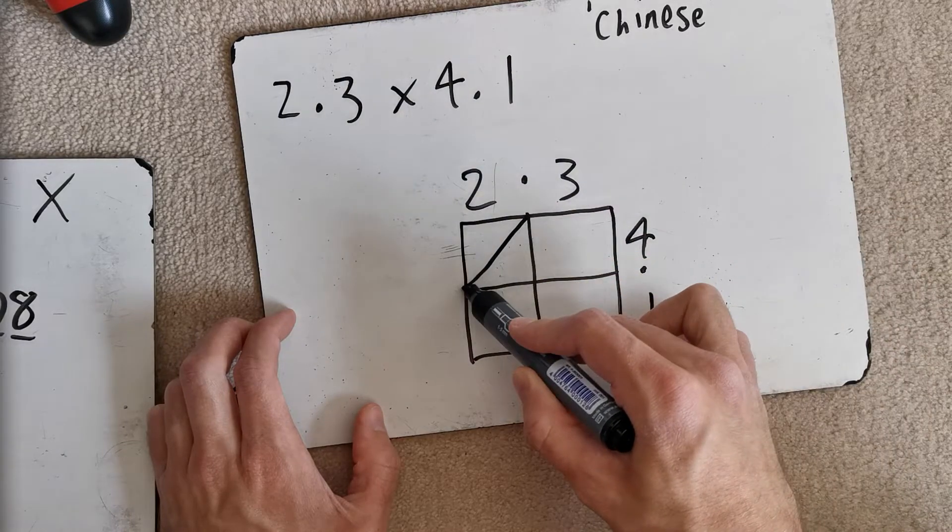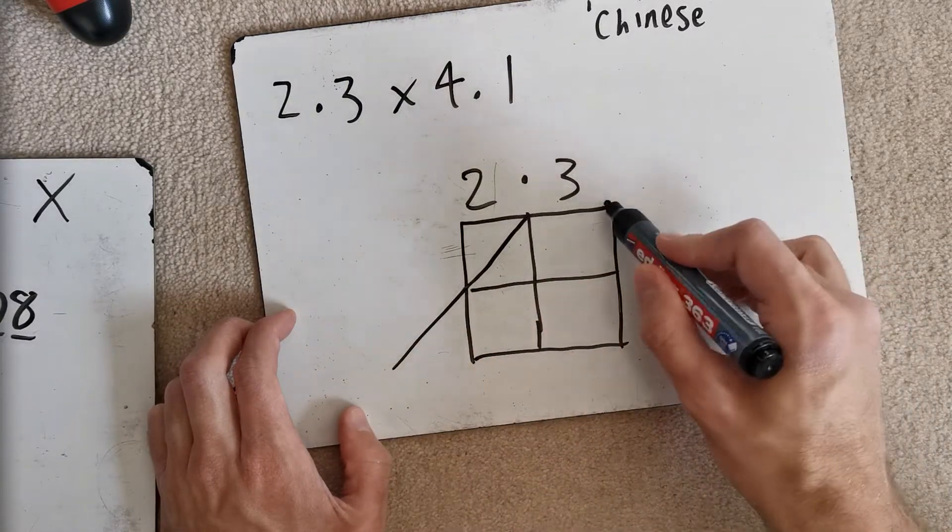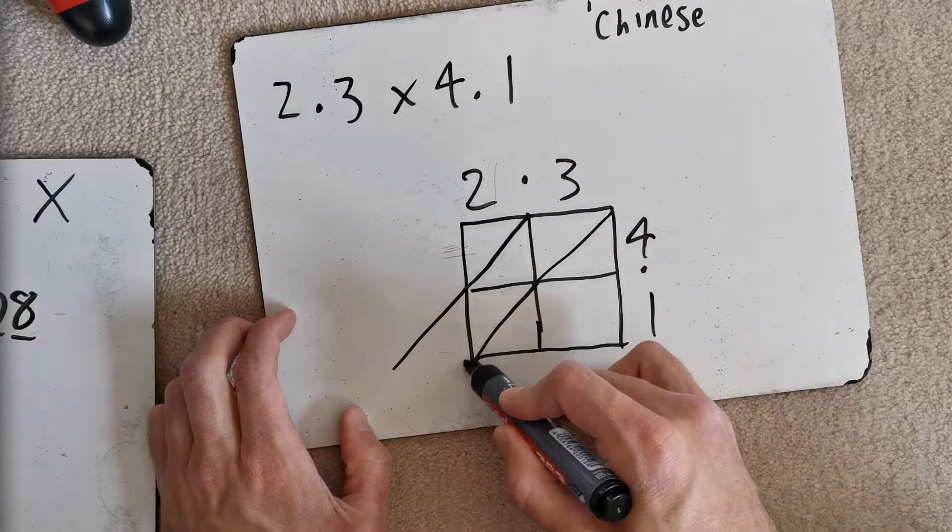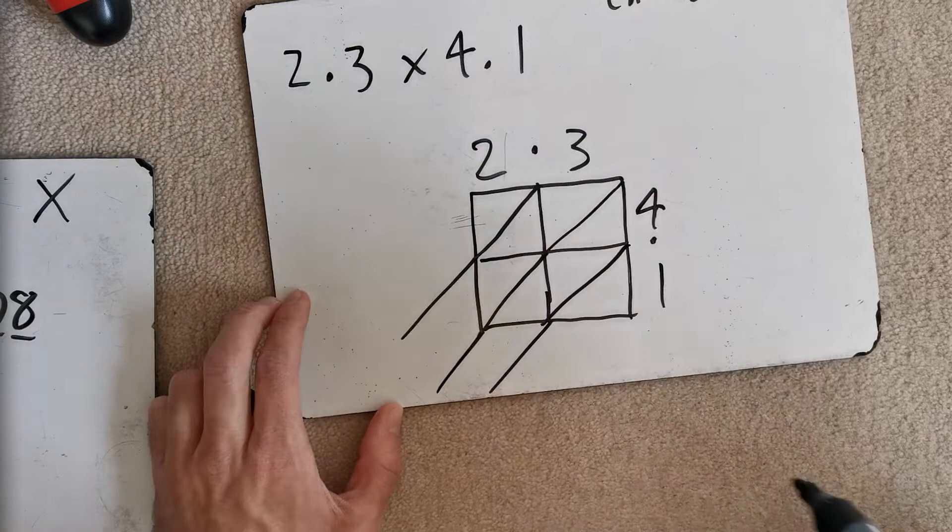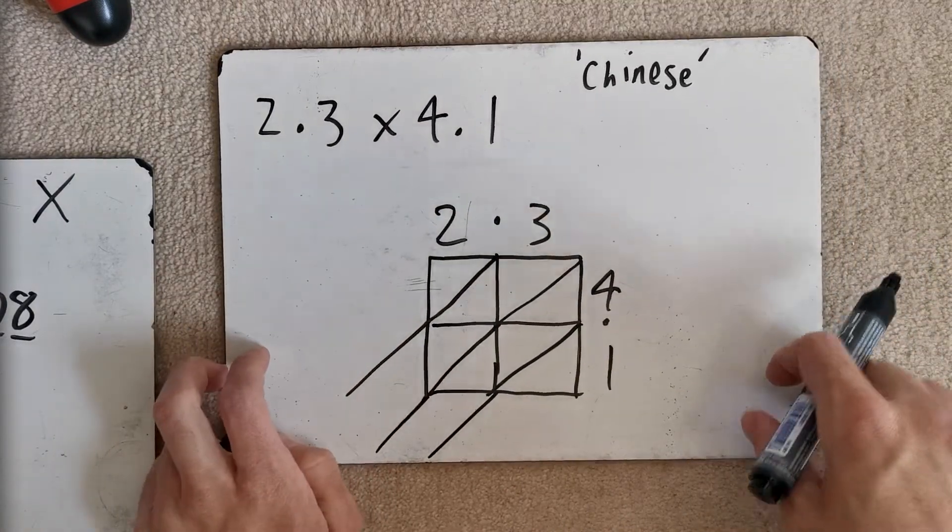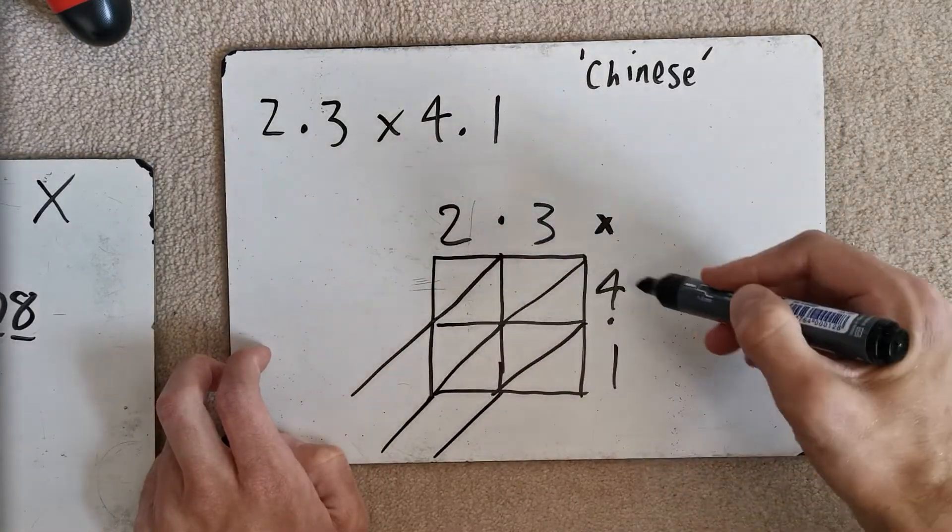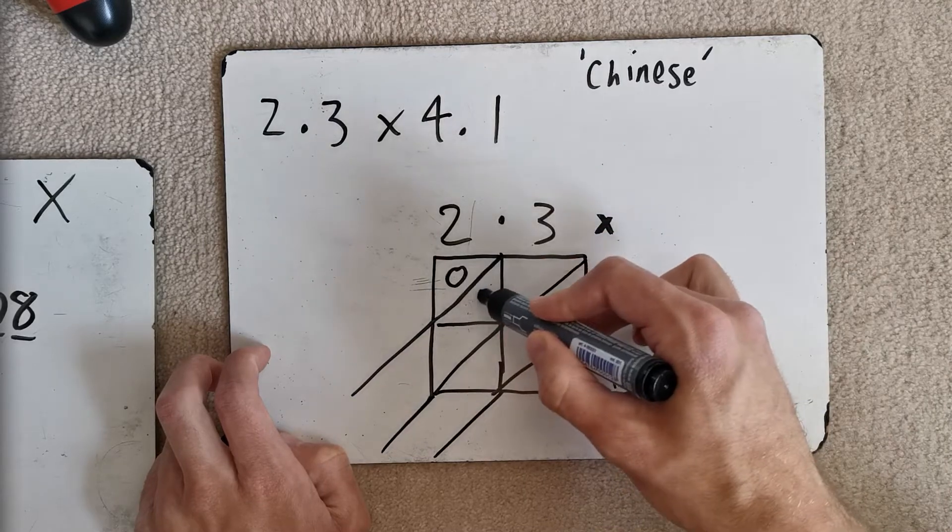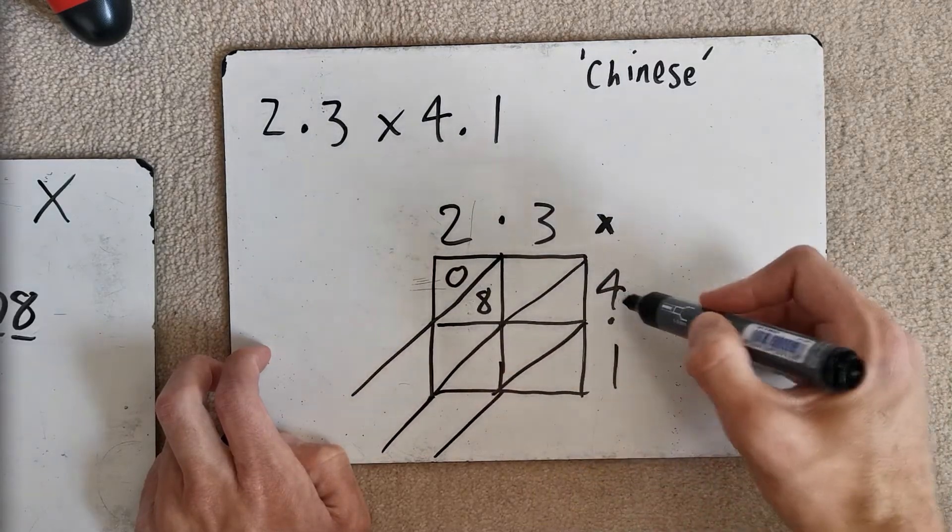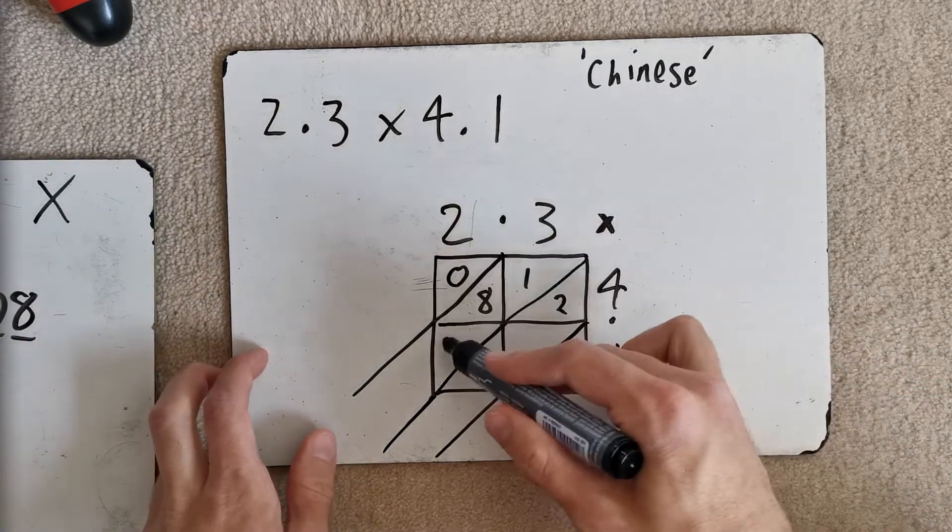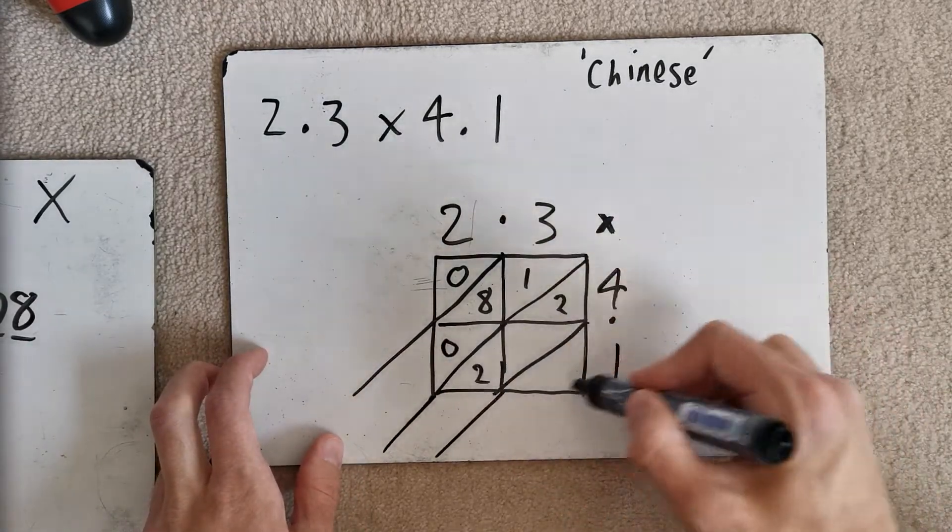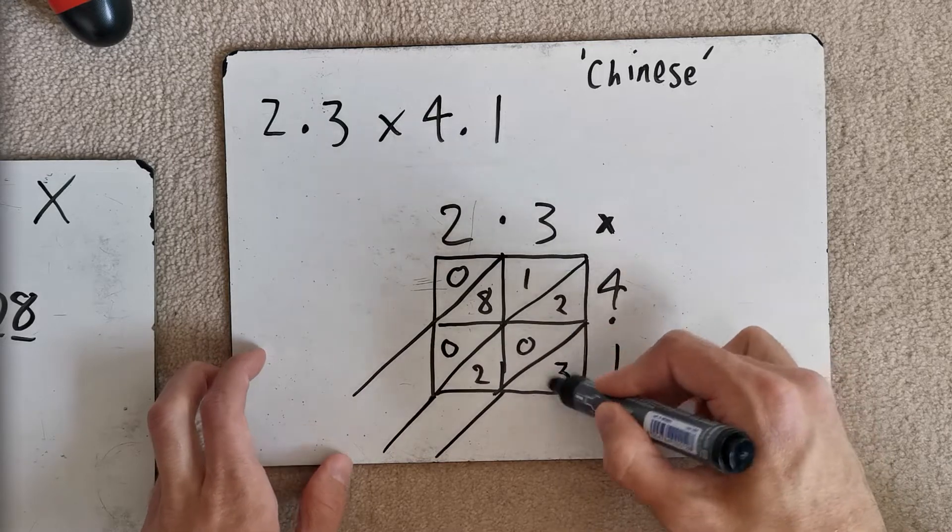You've got to go from corner to corner and extend it. Corner to corner to corner and extend it. Corner to corner and extend it. Okay? Now, what's going to go in these boxes? This is where you've got to do your multiplication. 2 times 4 is 8. So, we put 0, 8. 3 times 4 is 12. So, we put 1, 2. 2 times 1 is 0, 2. 3 times 1, 0, 3.